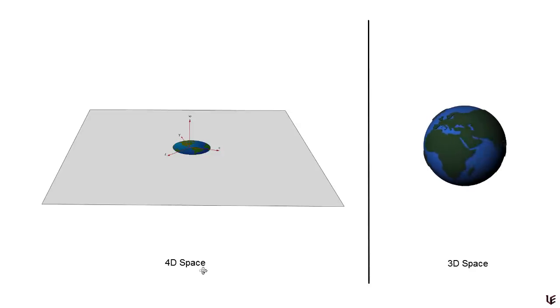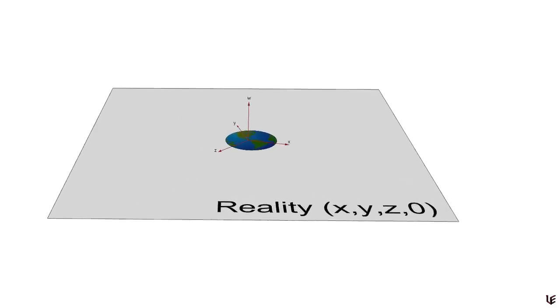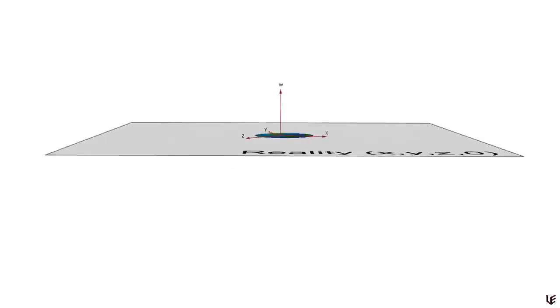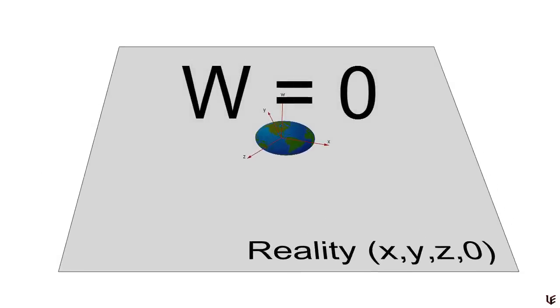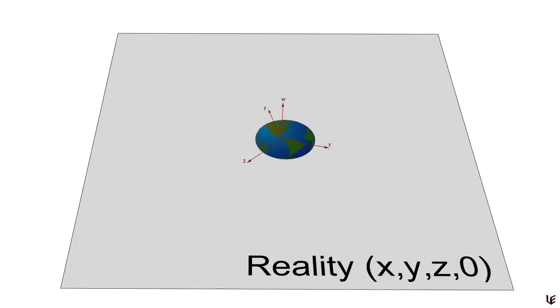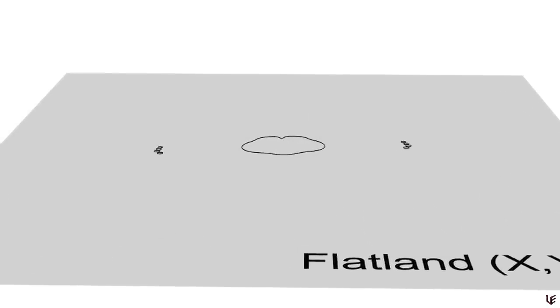This is our reality, and as three-dimensional creatures our w coordinate is zero — just like the z coordinate of a flatlander is zero. So everything we see and interact with exists on this w equals zero hyperplane. We will never be able to physically see what a four-dimensional object looks like, because all we can see is a three-dimensional cross-section or slice of a 4D object as it passes through this hyperplane. This is the same problem flatlanders had — they can only see a slice as it passes through their 2D plane. But by studying these slices, it's possible to build an understanding of 4D geometry.